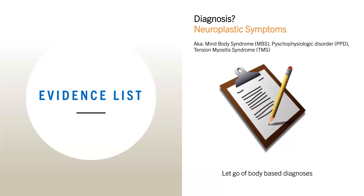I recommend creating an evidence list from the FIT criteria that supports the diagnosis of neuroplastic symptoms. Review it regularly, especially when symptoms worsen and doubt creeps in. It's important to let go of body-based diagnoses. You may still want to meet with a physician for reassurance. A physician aware of this model can be most helpful, but if that's not accessible, say to your physician, 'I think these symptoms may be due to stress, but I want to make sure I'm not missing anything.' The evaluation and testing to rule out structural damage is often fairly straightforward. It's also important not to go too far down the rabbit hole of testing and pursuing findings that are not actually worrisome or causing symptoms.